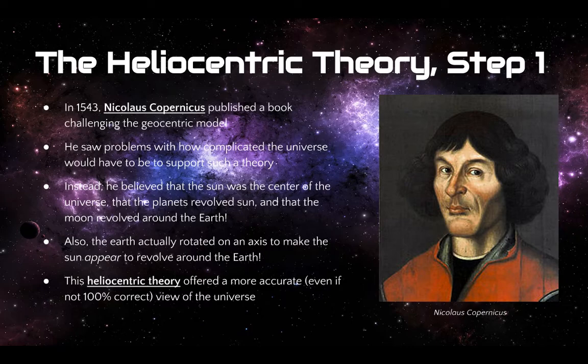Basically, in 1543, he publishes a book challenging this geocentric model. He just thought that geocentric model became way too complicated when trying to prove kind of small things that were going on in space, in the universe. So instead, he developed a model based on the idea that the sun was the center of the universe, and that the planets revolved around the sun, and even that the moon revolved around the Earth. And to make things even kind of more crazy, the Earth actually rotates on its axis and turns, which is what makes the sun appear to revolve around the Earth. So he kind of hammered out a lot of these issues.